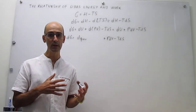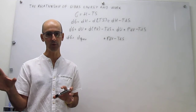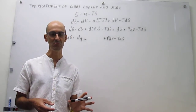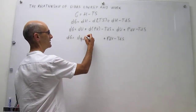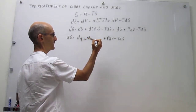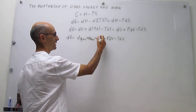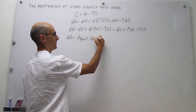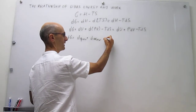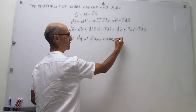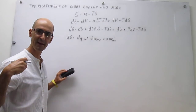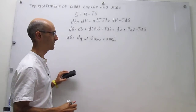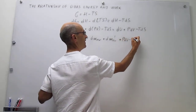What we're going to do is separate these two types of work. On one hand we have expansion work, which we know how to handle, and the rest — non-expansion work. We write this as the reversible expansion work term, plus a second term denoted with a prime, representing reversible non-expansion work. That prime term covers all types of work such as muscular work, electrical work, and magnetic work, plus P·dV minus T·dS.